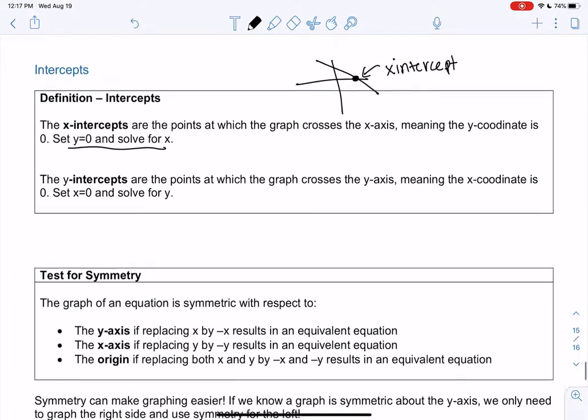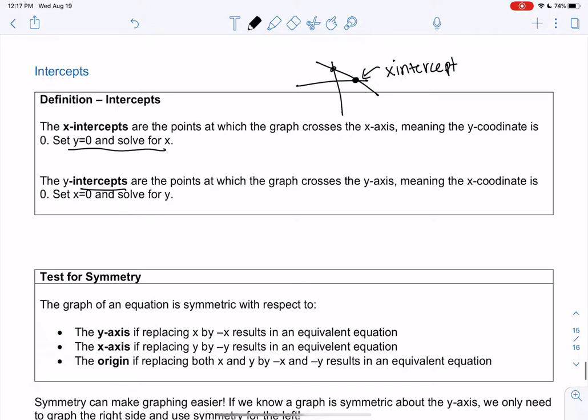And then basically the opposite for the y-intercept. It goes through the y-axis, meaning x is zero, so we set x equal to zero and solve for y. Lines only have one, but different shapes could have more than one. So this will help us when we get into graphing.